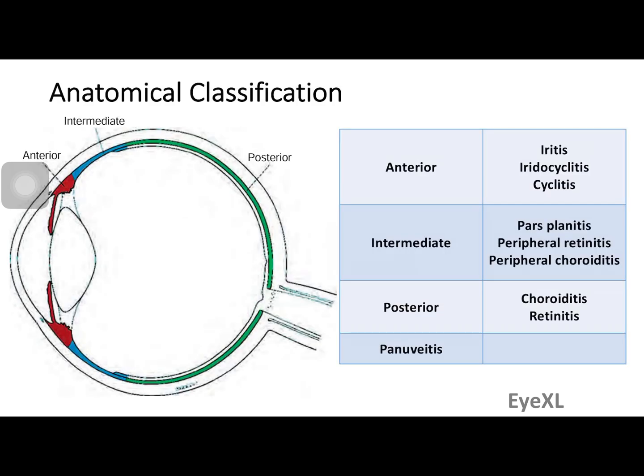Good evening. Let's discuss the etiology and pathology of anterior uveitis. The uvea is one large structure divided into an anterior, intermediate, and posterior part. When we say a patient has anterior uveitis, we are primarily referring to the iris and the ciliary body — specifically the pars plicata portion of the ciliary body.